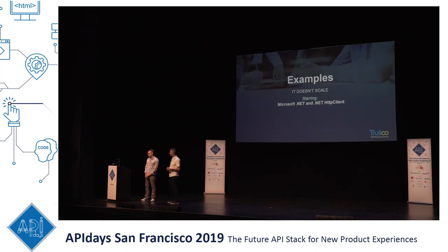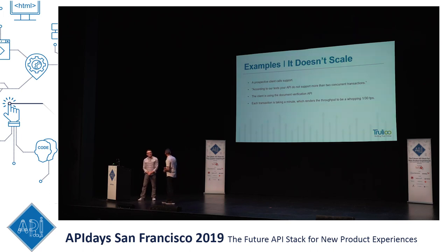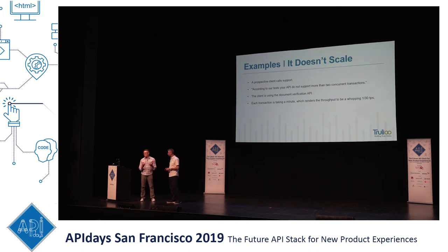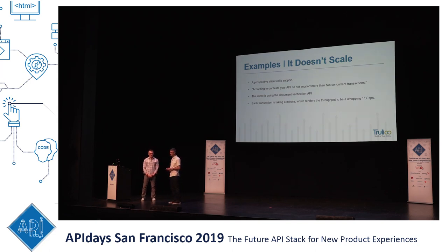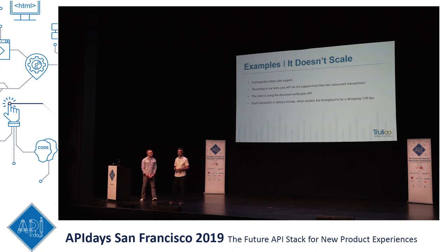We have another example — this time with .NET and HTTP client. A prospective client calls us: 'We've been testing the service and we saw that your API does not support more than two concurrent transactions.' We've been more than seven years on the market, so that's probably not true. This client is using document verification, which involves a lot of decision making and sometimes takes about a minute — one-thirtieth of a transaction per second. We wouldn't be a sustainable business at that performance.